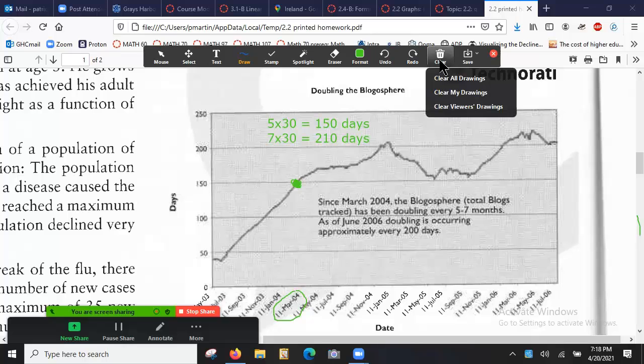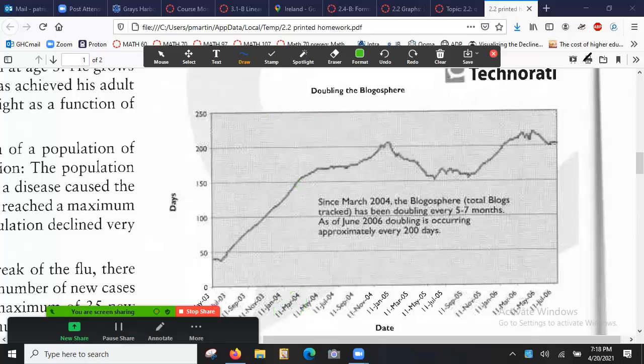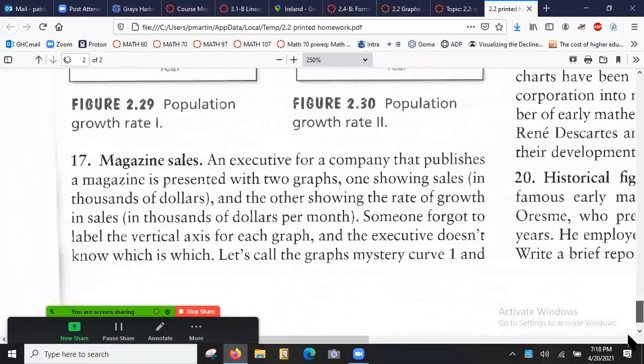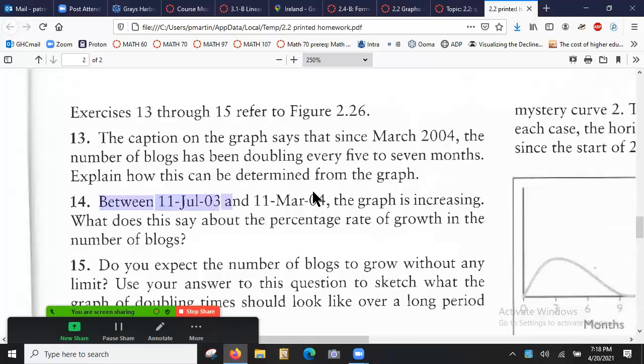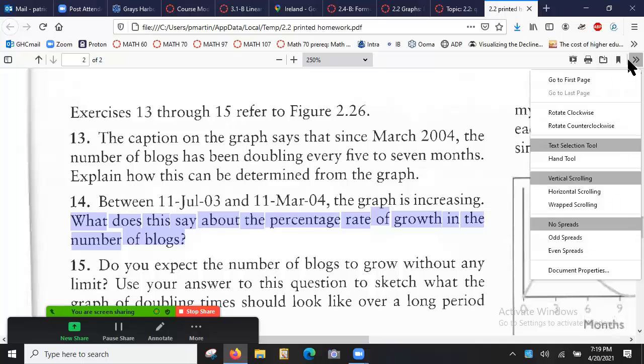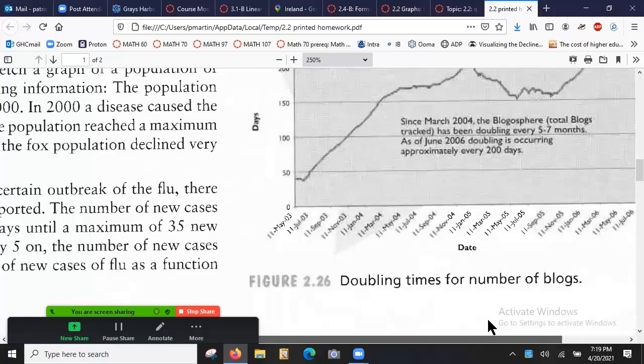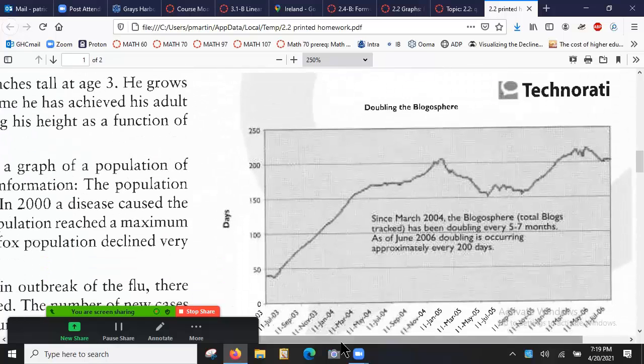I'm going to take that as a yes. Any questions? I'm okay with that. Cool. All right. Let's see. Knock that off again. I have to go to the next question. This is a bit tedious. Sorry, everybody. We'll get there. Question 14. Between July and March, the graph is increasing. What does this say about the percentage rate of growth in the number of blogs? Got it. Everyone take it just a few minutes and try to answer that. Between July and March, the graph is increasing. What does this say about the percentage rate of growth in the number of blogs? Or no, just think about the growth of the blogs, basically. Don't worry about percentage for now. It doesn't matter. It's just the, what does it say about the growth of the blogs?